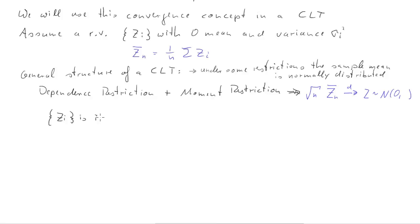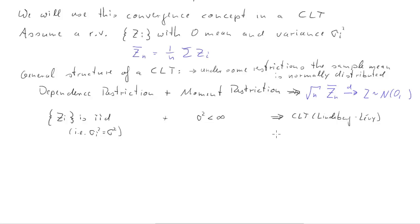The first example is where we impose that the z_i are IID — independently and identically distributed — meaning the individual variances are all the same: sigma_i squared = sigma squared. We also impose that the variance is finite. These two restrictions together imply the Lindeberg-Lévy central limit theorem, which establishes that sqrt(n) times the sample mean converges in distribution to a random variable z that is normally distributed with zero mean and variance sigma squared.